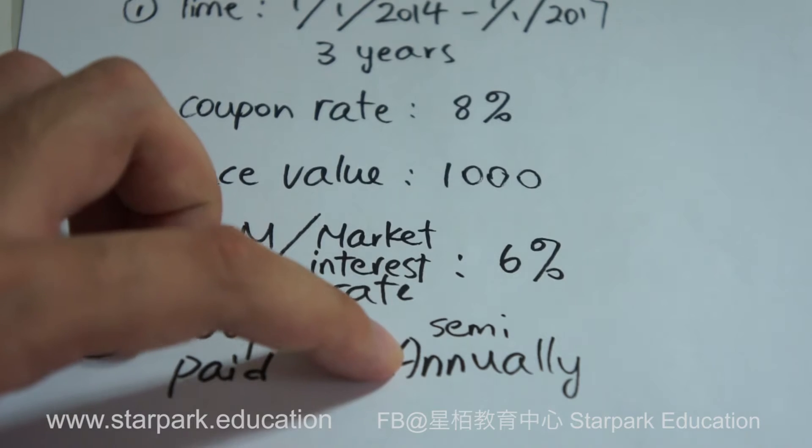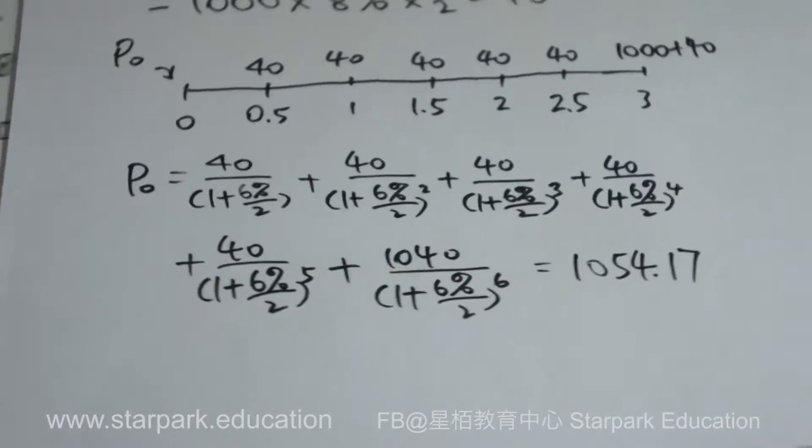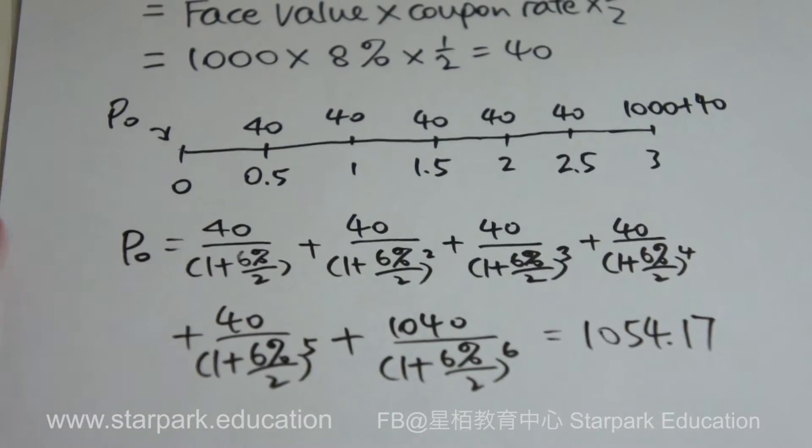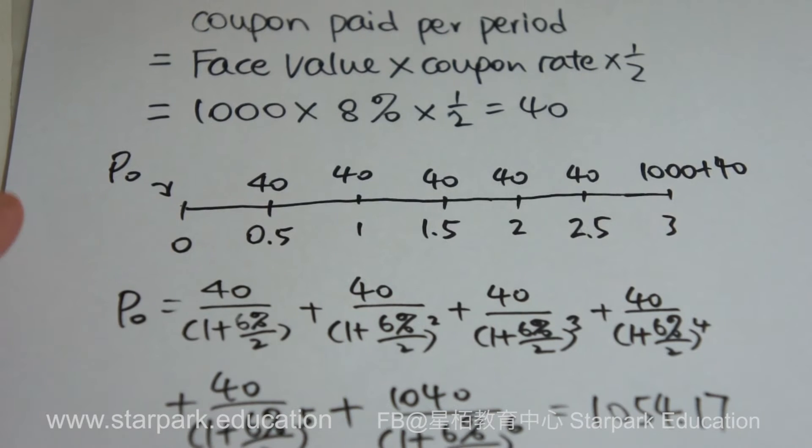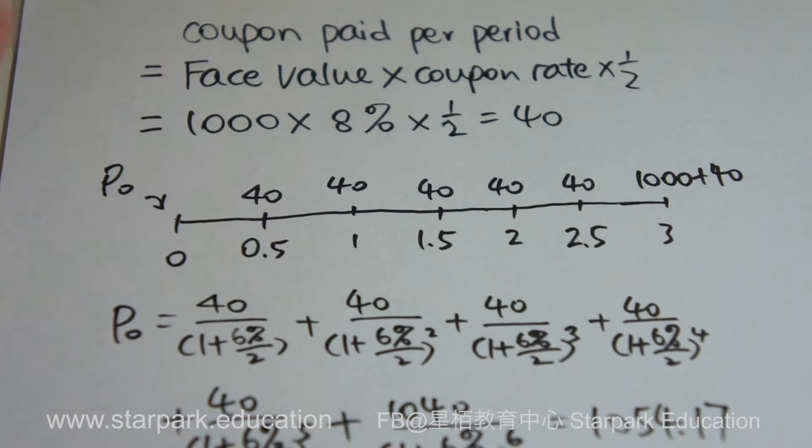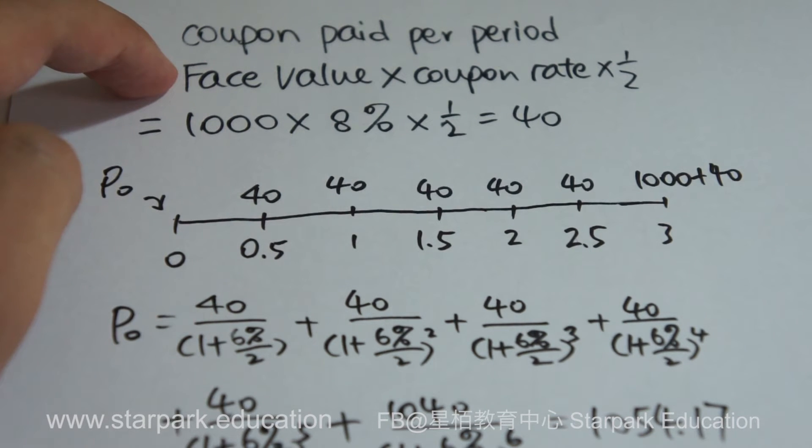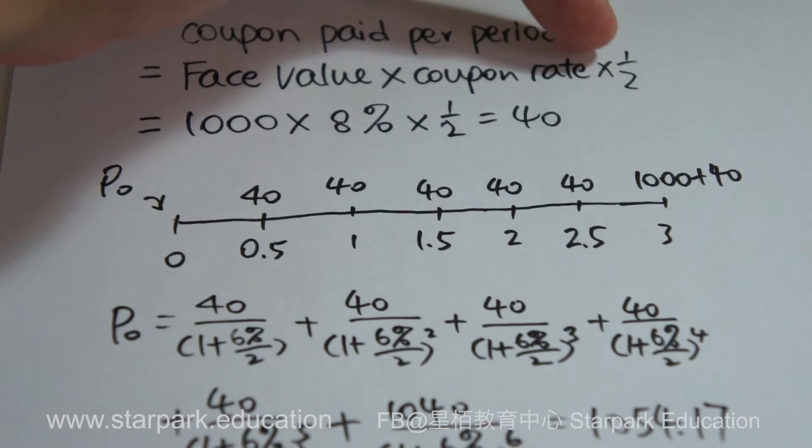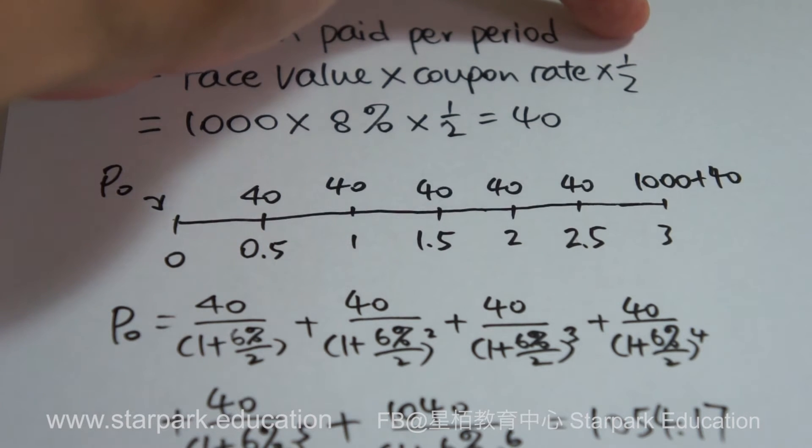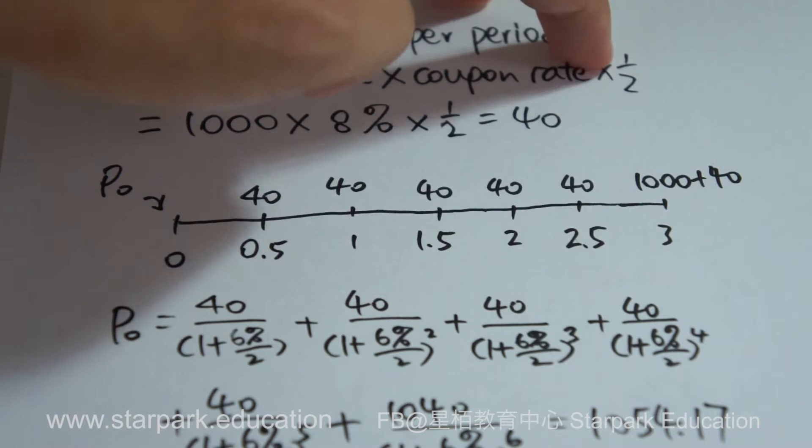The difference now is the coupon payment is semi-annually. That means half a year I received the first coupon. So what is the difference if the frequencies change from annually to semi-annually? Let's see the calculations. The coupon paid per period - in this example, per period is half a year - the same equation: face value multiplied by the coupon rate. But this time we need to divide it by 0.5, which means 1 over 2, because half a year I received one coupon. So we need to divide the annual coupon rate by 2.